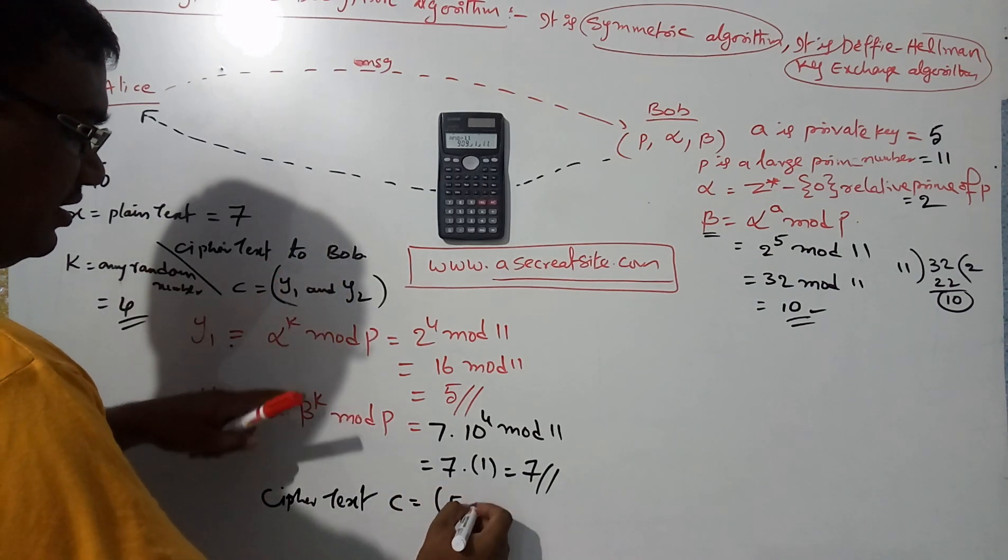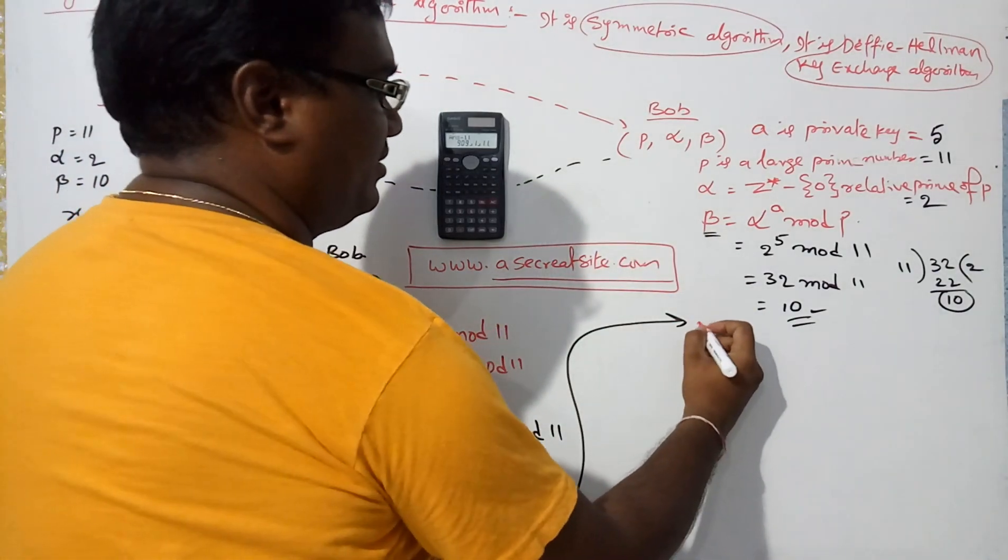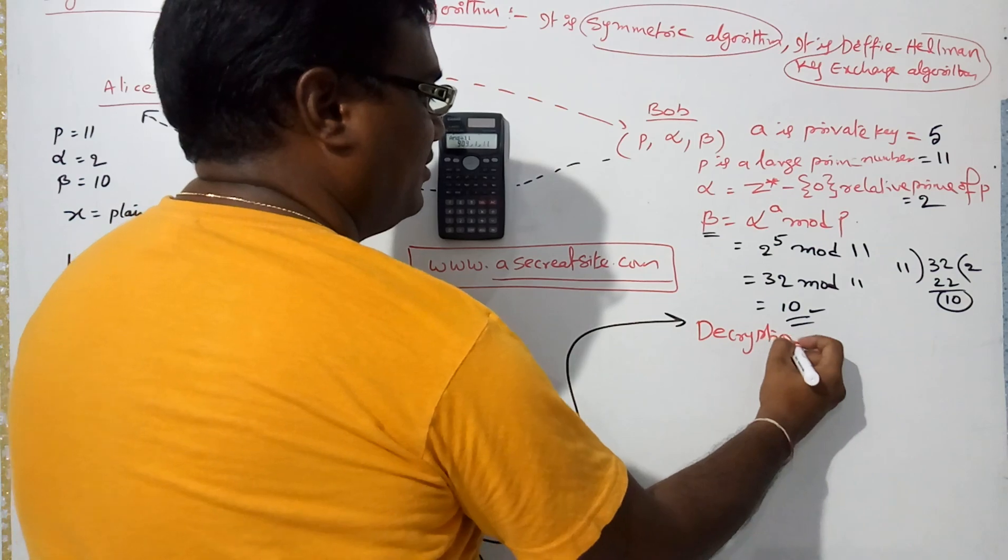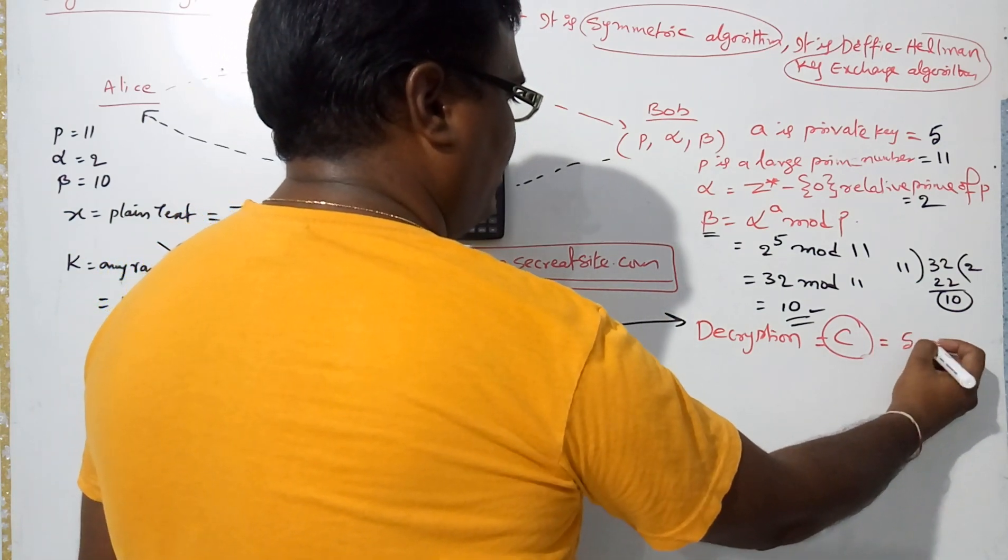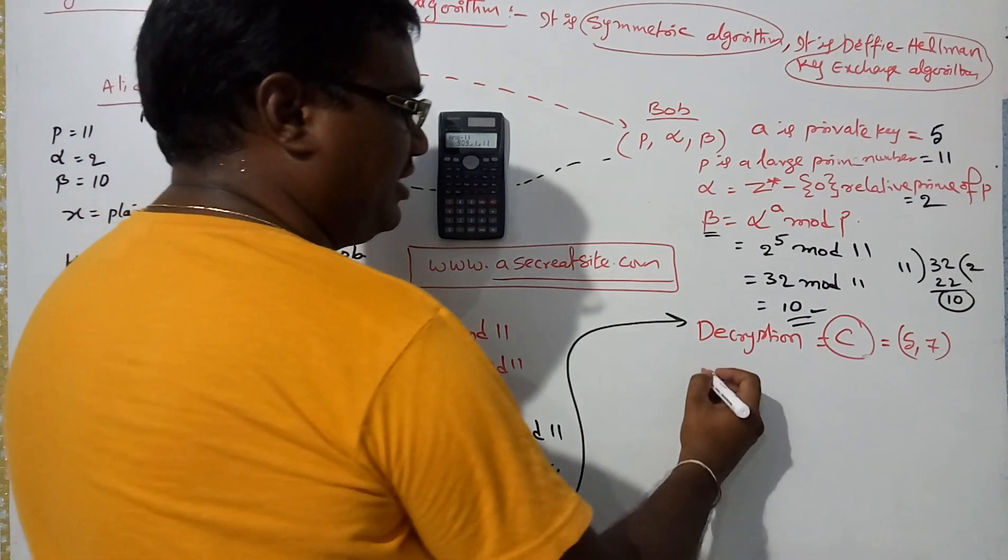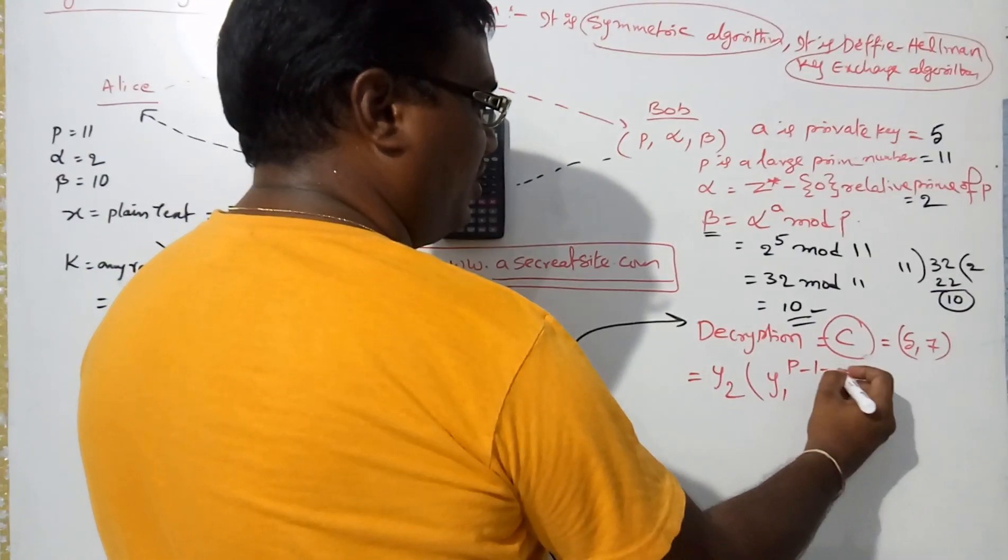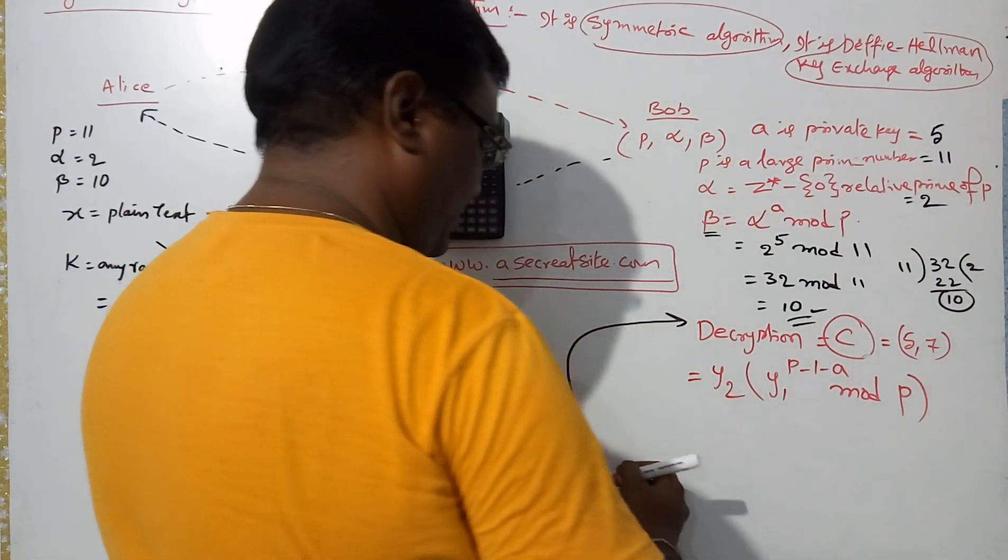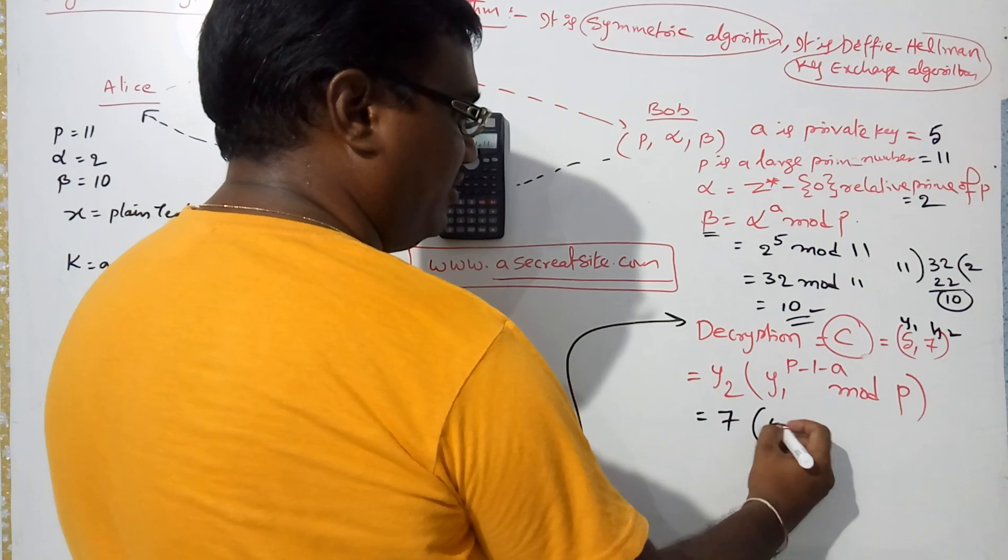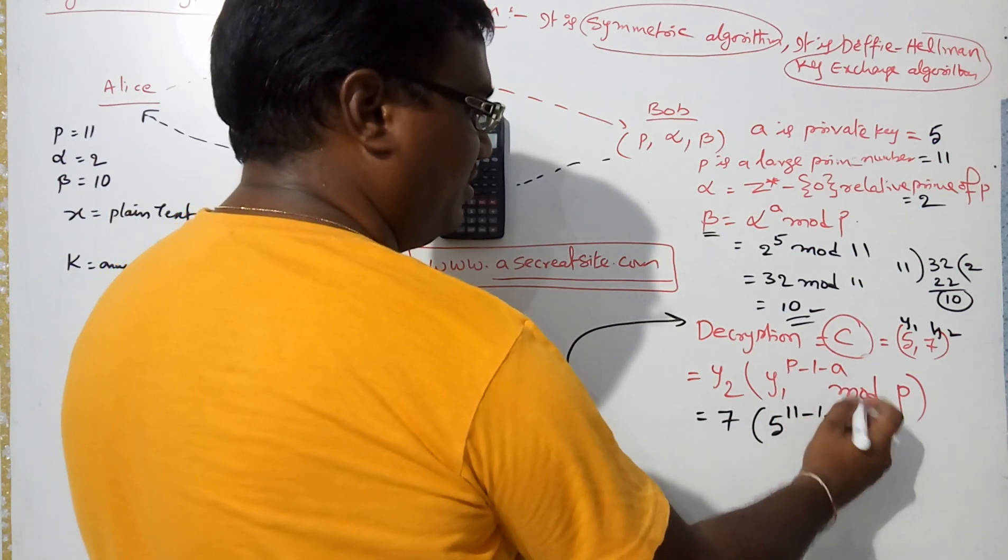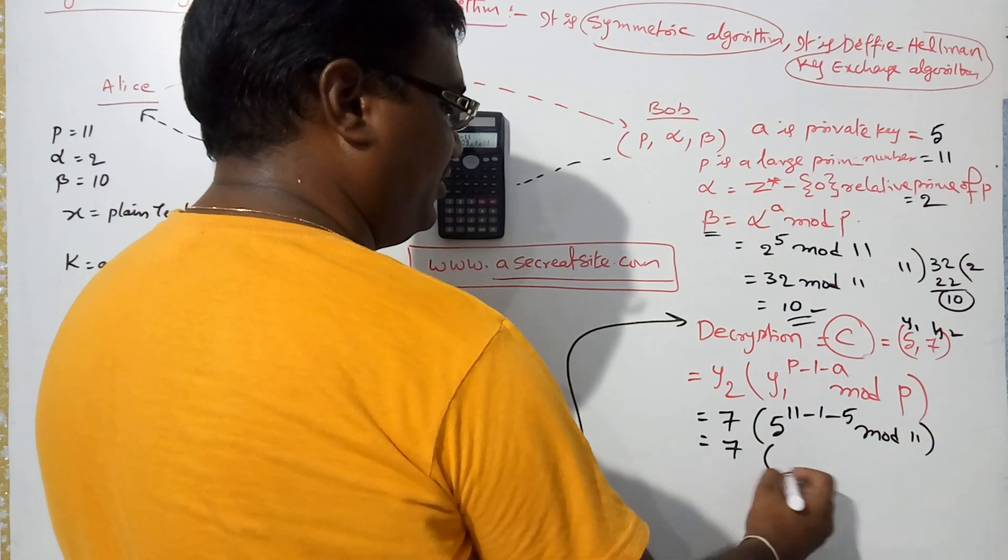For decryption, the formula is y2 times y1 to the power (p minus 1 minus a) mod p. y2 value is 7, y1 value is 5. That's 7 into 5 power (11 minus 1 minus 5) mod 11, which equals 7 into 5 power 5 mod 11.